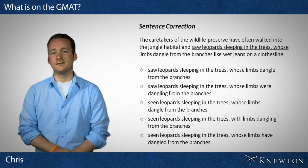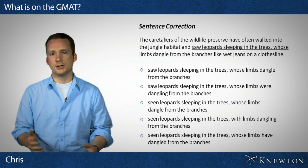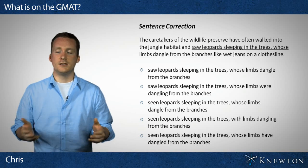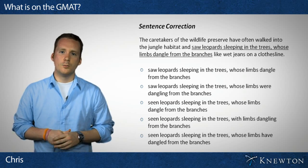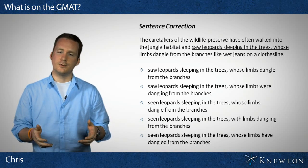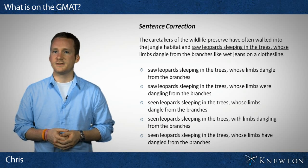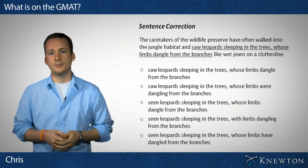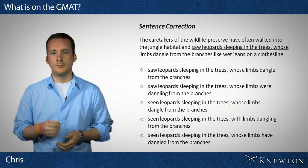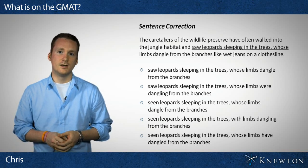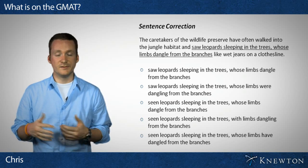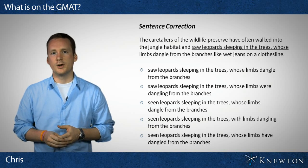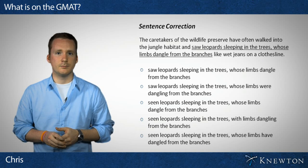On the verbal side, you'll find sentence correction. You're given a passage — maybe a couple of sentences — with a portion underlined. You take anything not underlined as given, and then edit the underlined portion if there are grammatical mistakes. The first answer choice is always identical to the original prompt, so there may be no mistake at all. If you do see a mistake, you pick from the remaining choices to correct the error without introducing new ones. You essentially revise the prompt to be grammatically correct while maintaining the original integrity of the statement.